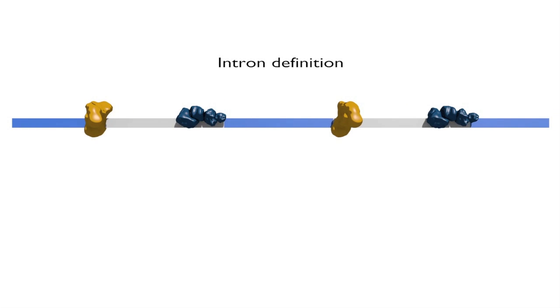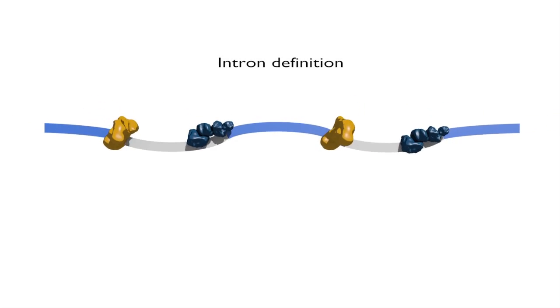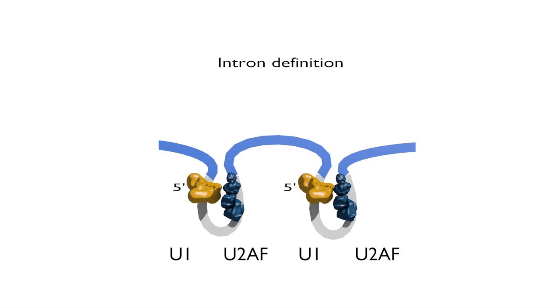By contrast, the alternative model sees introns being defined through interactions between factors bound to sequential 5' and 3' intron splice sites.